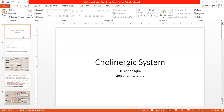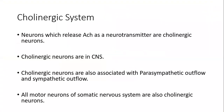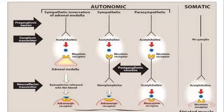Now we try to understand where these cholinergic neurons are located, because then we will be able to understand the action of the drugs. We have the parasympathetic nervous system, the sympathetic nervous system, and we also have the somatic nervous system. In the sympathetic and parasympathetic nervous systems we have pre-ganglionic neurons and post-ganglionic neurons.